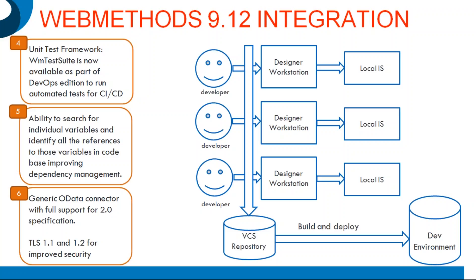There are a few more under-the-hood changes: the ability to search for individual variables and identify all references to those variables in the code base, improving overall dependency management. From Cloud Streams perspective, the generic OData connector is now available with support for 2.0 specification and limited support for 4.0 specification. This means you can write your CRUD — create, read, update, delete — applications using the generic OData connector for popular cloud apps.